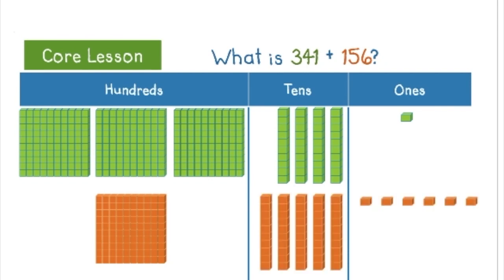Now that I have both numbers set up in base ten blocks, all I have to do is count up each column to find out the total. So I have four hundreds, nine tens, and seven ones. So 341 plus 156 equals 497.